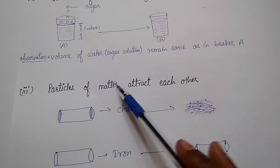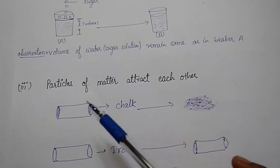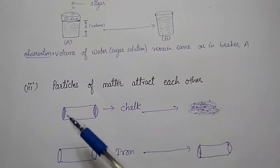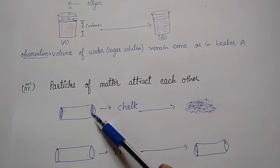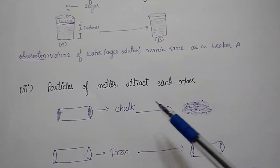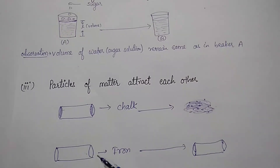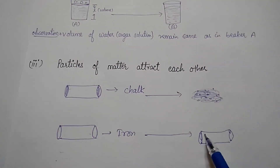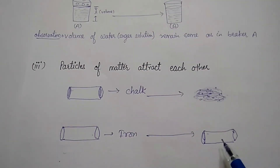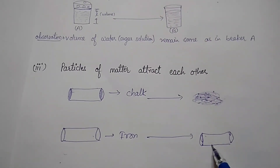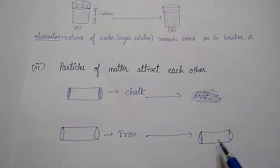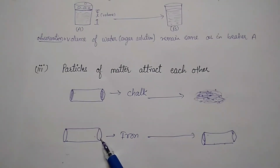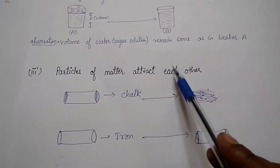Third: particles of matter attract each other. A very simple example — take chalk and iron, and hammer on each one by one. We find that after hammering on chalk, it gets converted into small pieces. But when we hammer on iron, it only slightly changes shape — it does not break into small pieces. This means there is a force of attraction between the particles of iron. So we can understand that particles of matter attract each other.